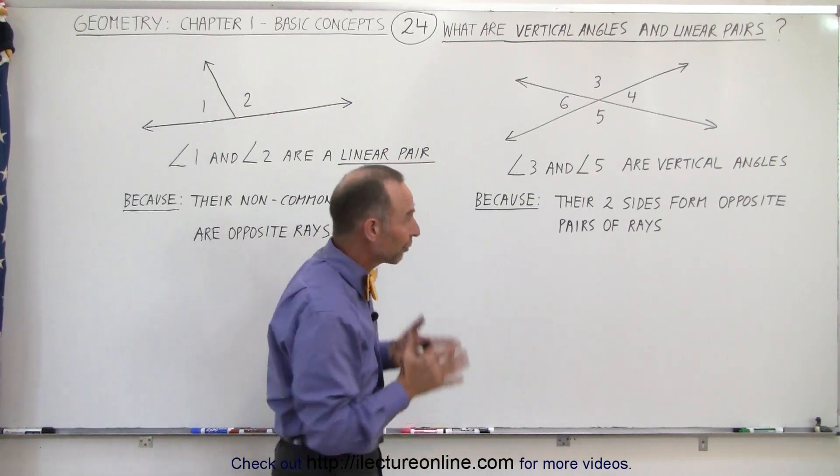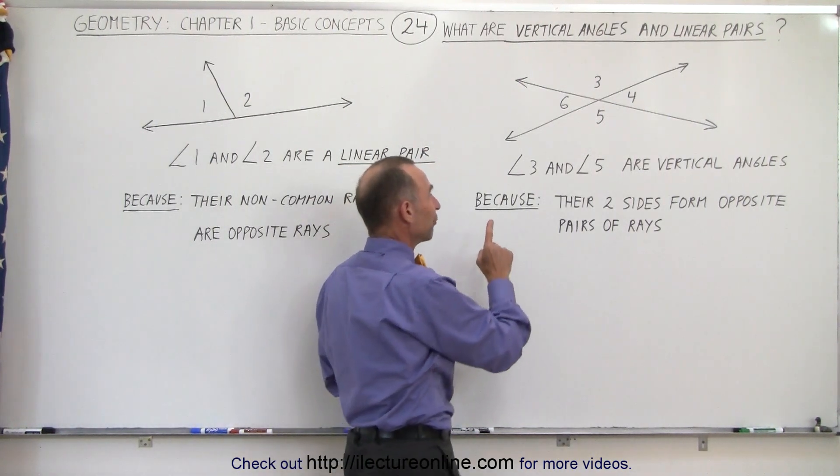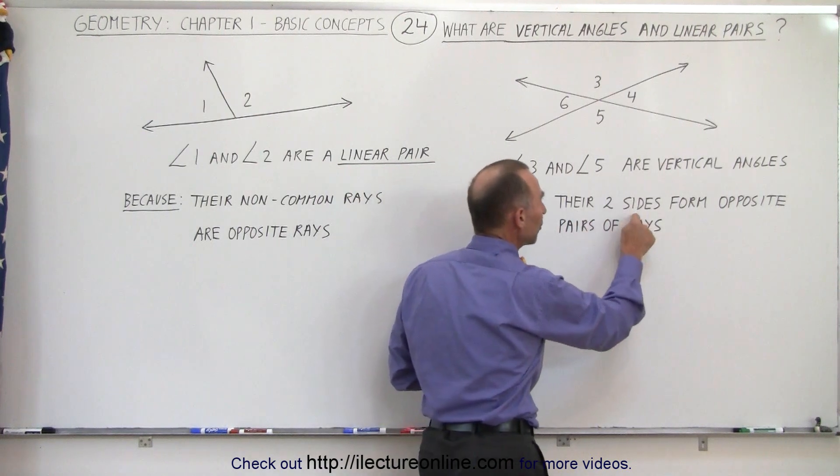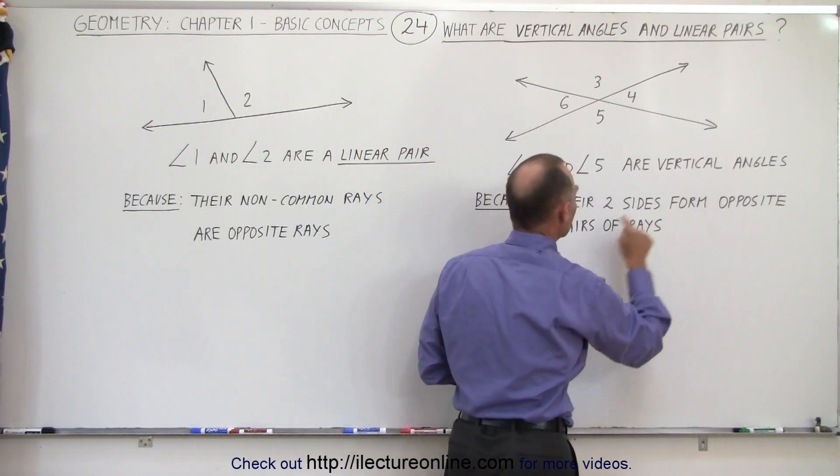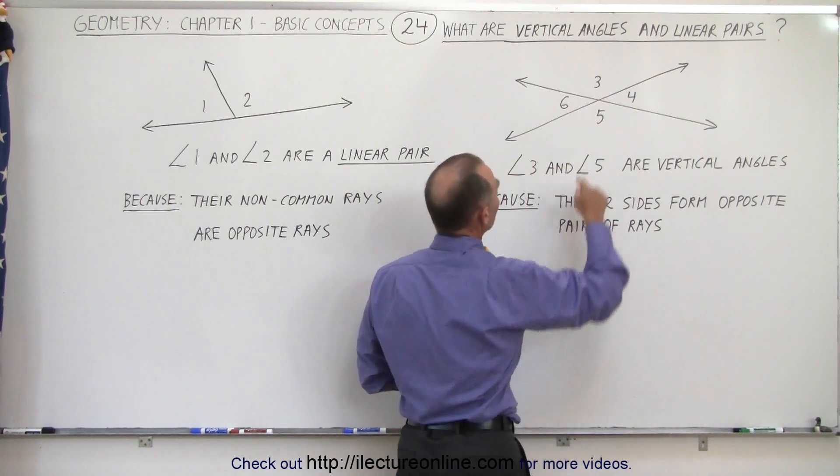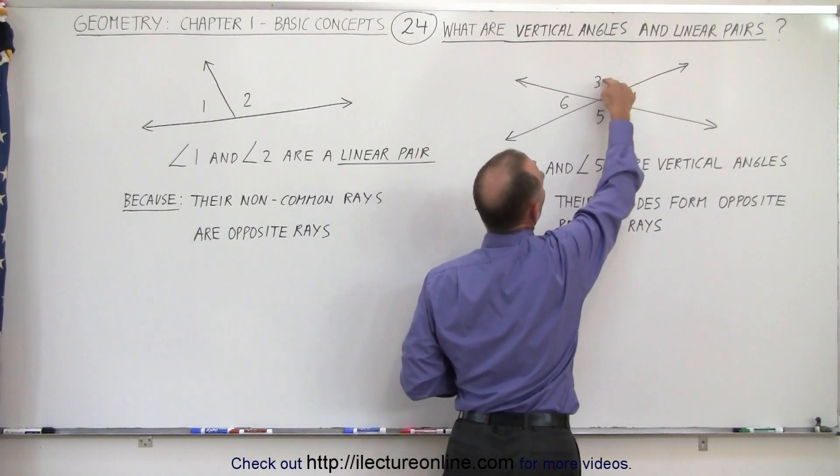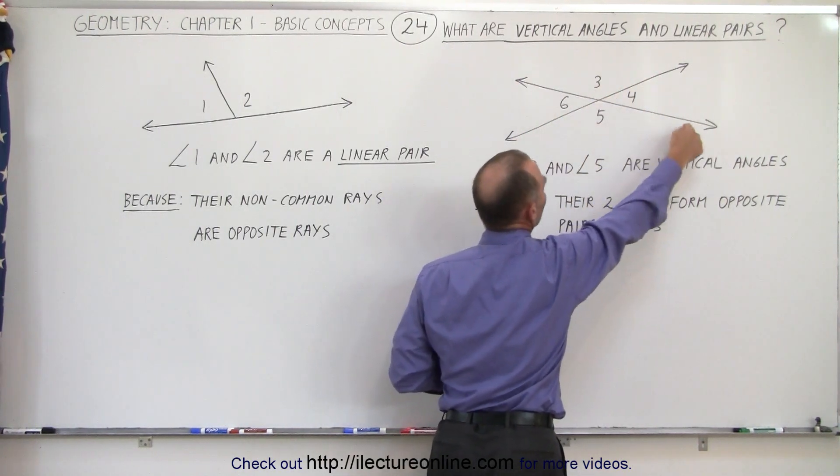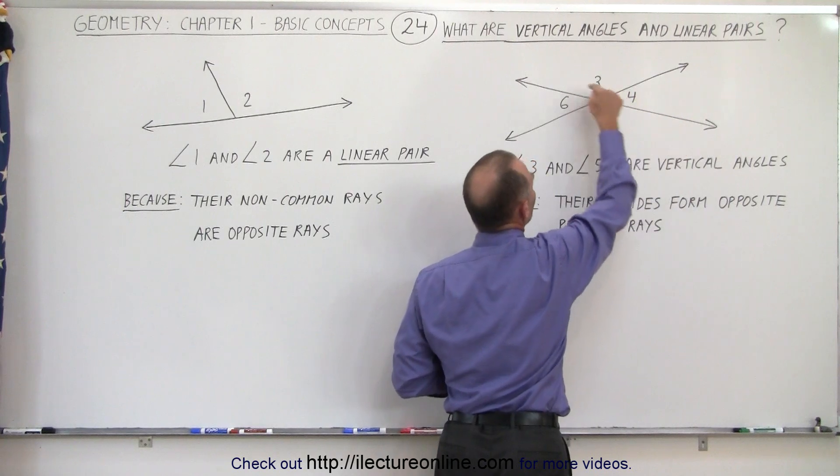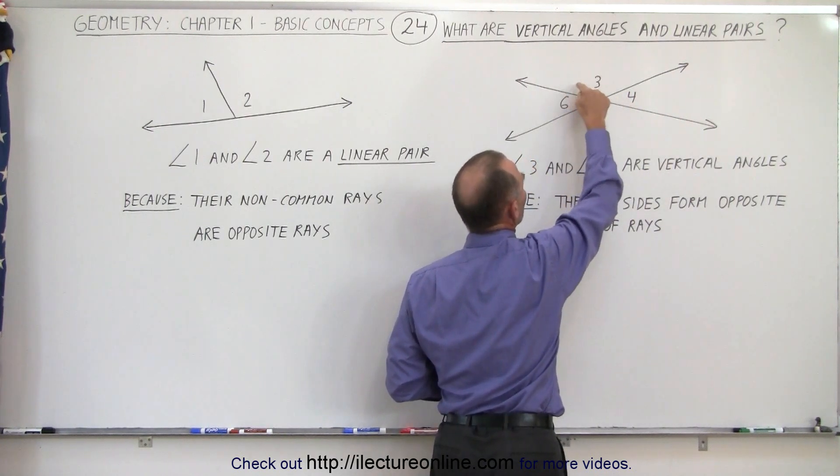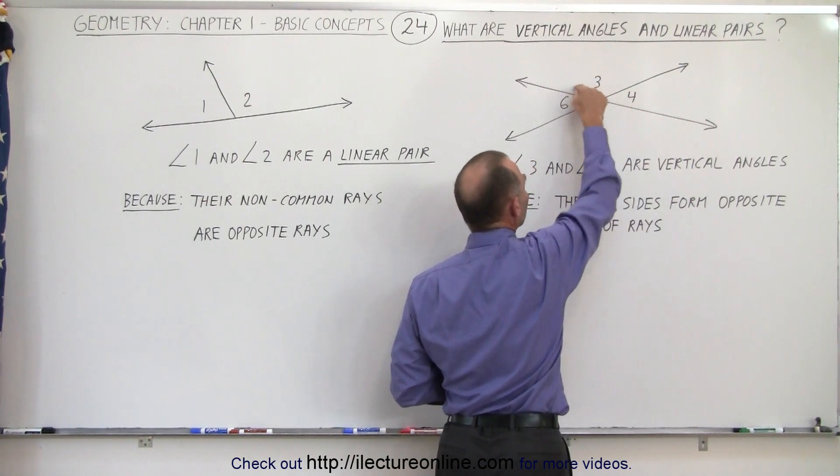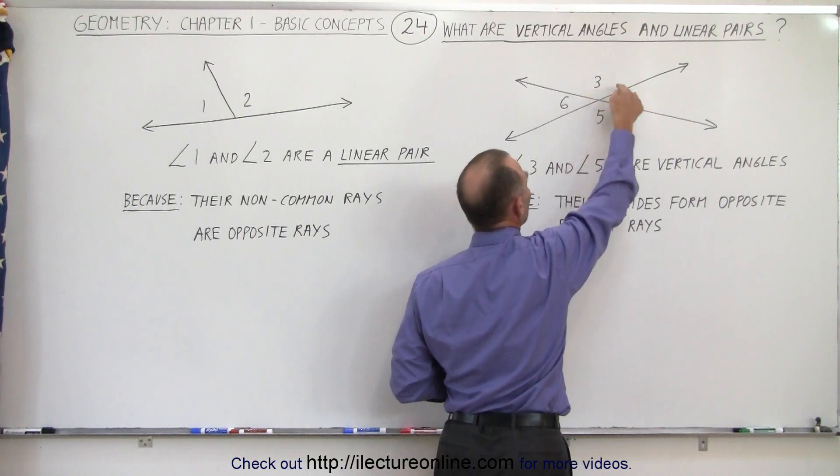What is the requirement for vertical angles? They're vertical angles because their two sides form opposite pairs of rays. So you can see these are the two sides of angle 3, these are the two sides of angle 5. This and this ray are opposite pairs of rays, or are opposite rays, and this ray and this ray are opposite rays.